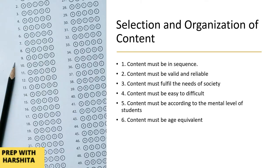Content का selection और organization करते समय ध्यान रखना है कि content sequence में हो, valid हो और उस पर rely किया जा सके। Content society की current needs को fulfill करे। Easy से difficult तक — सब कुछ होना चाहिए — और content बच्चों की mental level और age के according होना चाहिए।